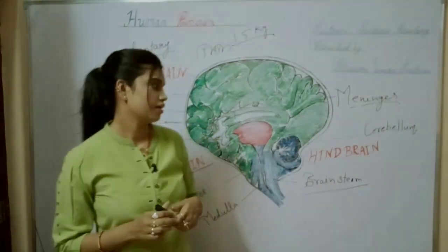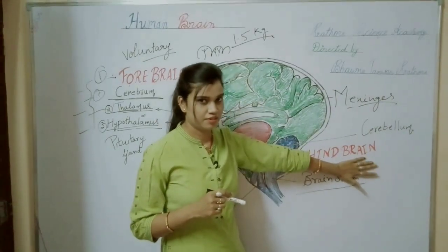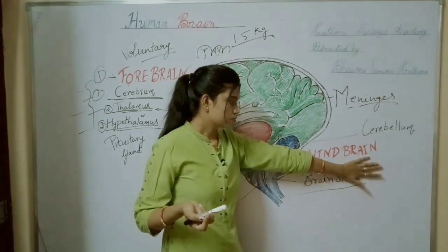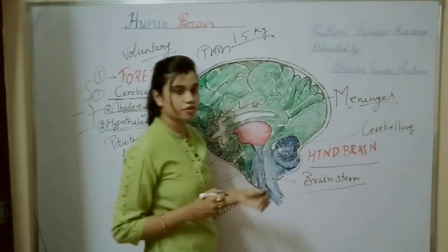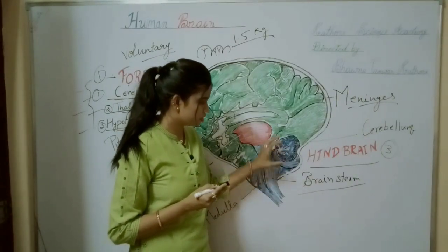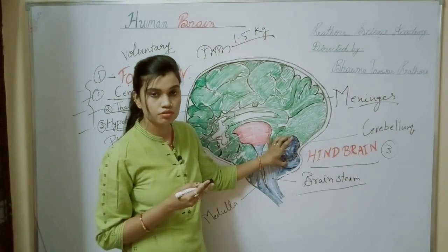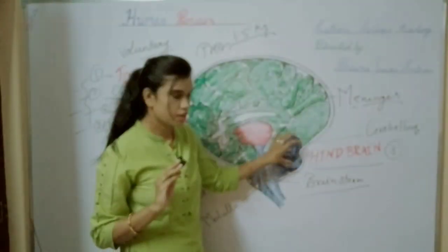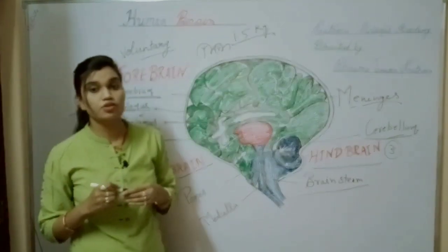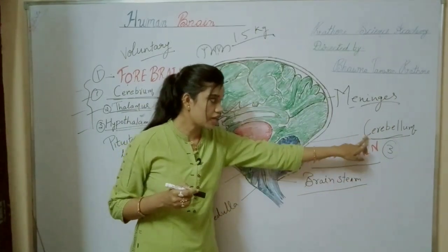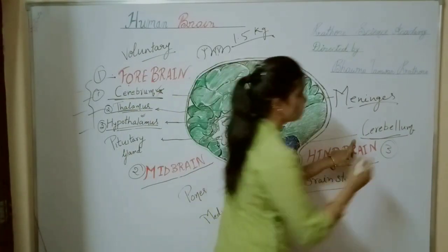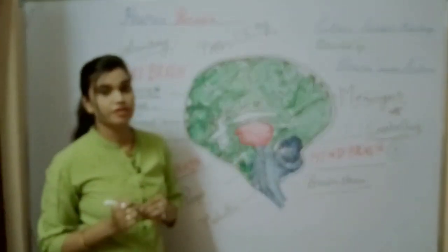The third part of the brain is the hindbrain — the last and most important part. Here you will find this flower-like structure. This smallest part is known as the cerebellum — the second largest part of the brain — and it is part of the hindbrain. Do not confuse the cerebrum with the cerebellum — both are different in function and are parts of different regions of the brain.